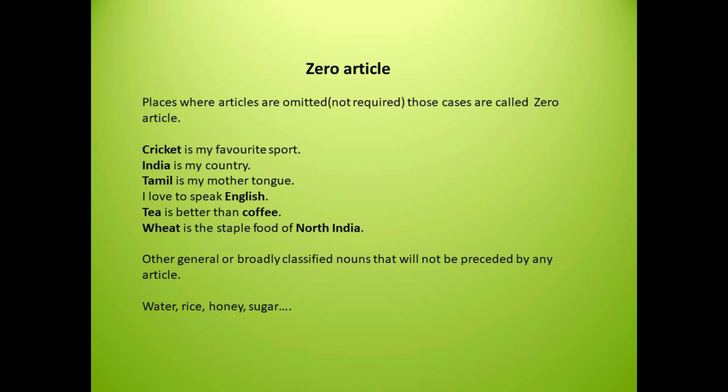Moving on to the next example: India is my country. Here, before India, we do not use articles. Similarly for countries like France, Russia, Germany, Africa — when these kinds of country names come, we do not use articles.